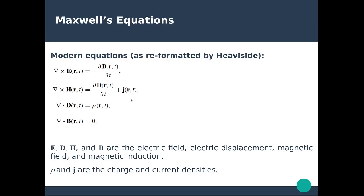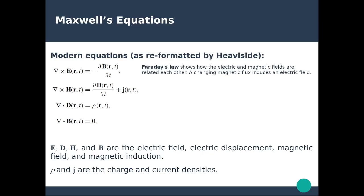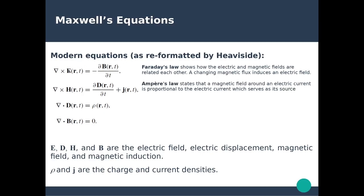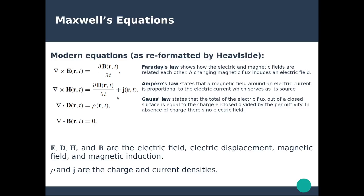Let's briefly discuss the physical meaning of these equations. The first, Faraday's law, describes the relationship between electric and magnetic fields — if you have a changing magnetic flux in time, this induces an electric field. The second, Ampere's law, states that a magnetic field around an electric current is proportional to that current, which serves as its source, and a change in time of the electric displacement is equivalent to this current. The third, Gauss's law, states that the total electric flux out of a closed surface equals the charge enclosed inside divided by the permittivity.